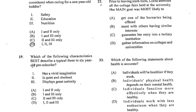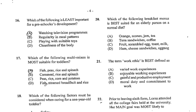Number 19. Which of the following characteristics best describes a typical 3-6-year-old preschooler? A 3-6-year-old preschooler has a vivid imagination, is curious, and displays great curiosity. The answer would be B, has a vivid imagination and displays great curiosity. Number 20. Which of the following breakfast menus is best suited for an elderly person on a normal diet? The answer would be C, which reflects a normal, medium breakfast with fruit, scrambled egg, toast, and milk.